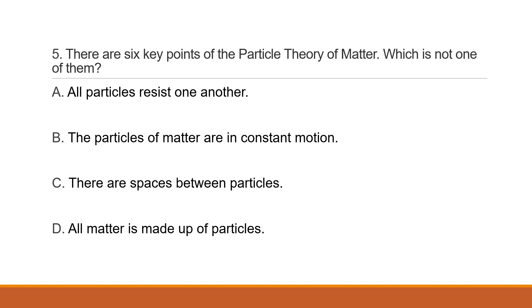Question 5: There are six key points of the particle theory of matter. Which is not one of them? A. All particles resist one another. B. Particles of matter are in constant motion. C. There are spaces between particles. D. All matter is made up of particles.